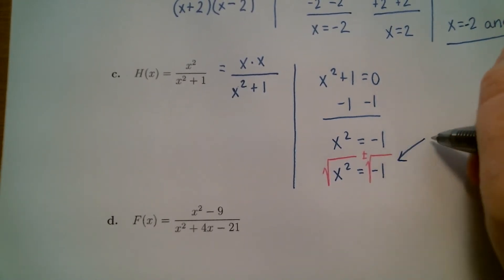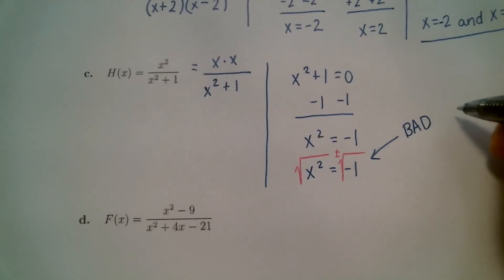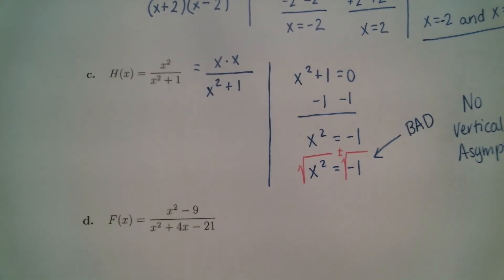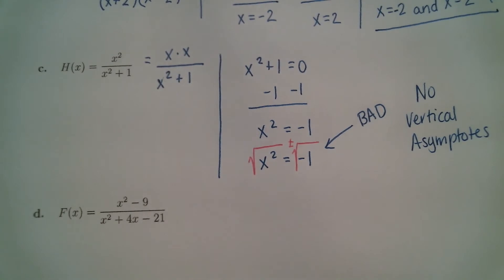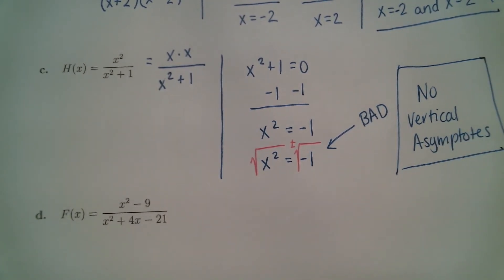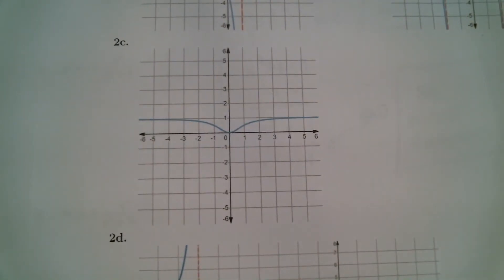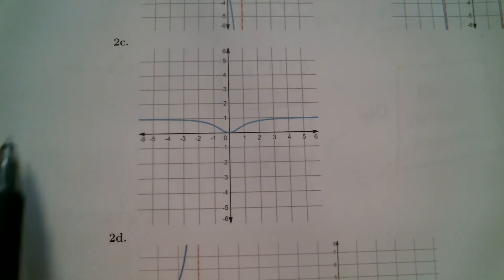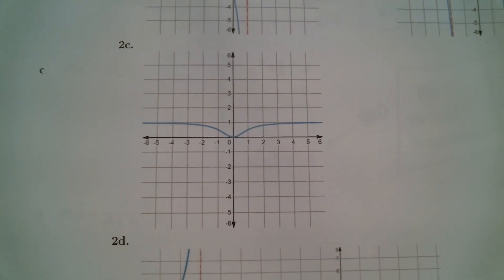So we can conclude: no vertical asymptotes, because you were trying to find the vertical asymptotes but ran into a problem going through the process. You can check yourself — plug this into your calculator. Here's the graph for 2C. You can see there is no vertical asymptote whatsoever. This will extend to the right forever, and this piece will extend to the left forever. No vertical asymptotes.